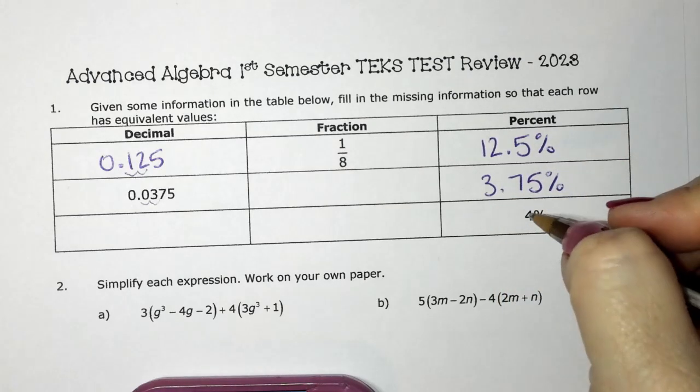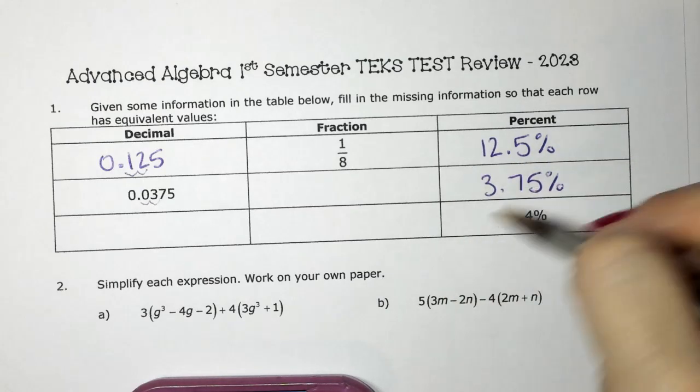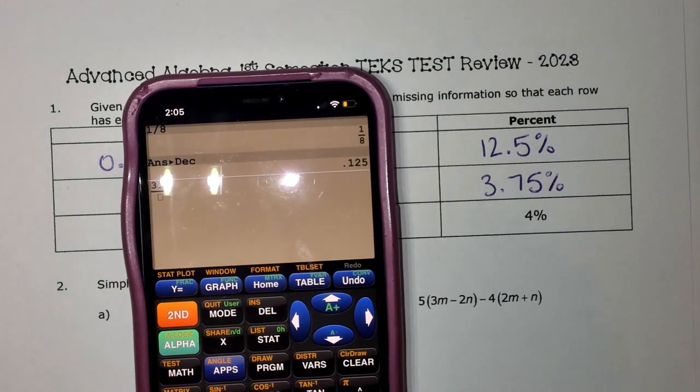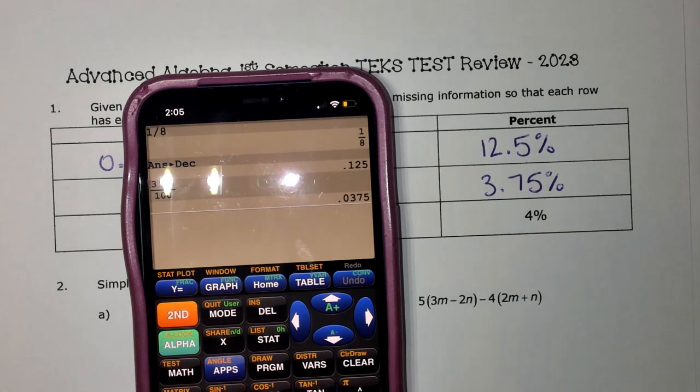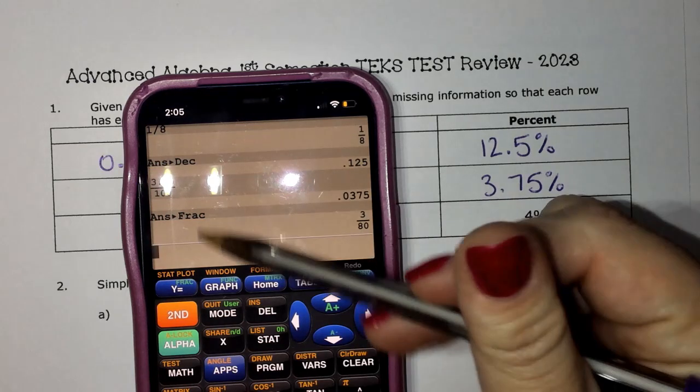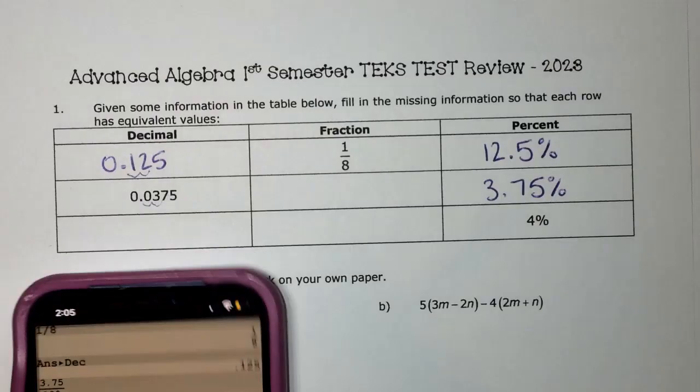And then to turn it into a fraction, we can always put the percent 3.75 over 100. Because remember, sorry, my calculator is weird. We can always turn it into a fraction by putting it like that. And then the calculator will simplify for us. So 3 over 80.